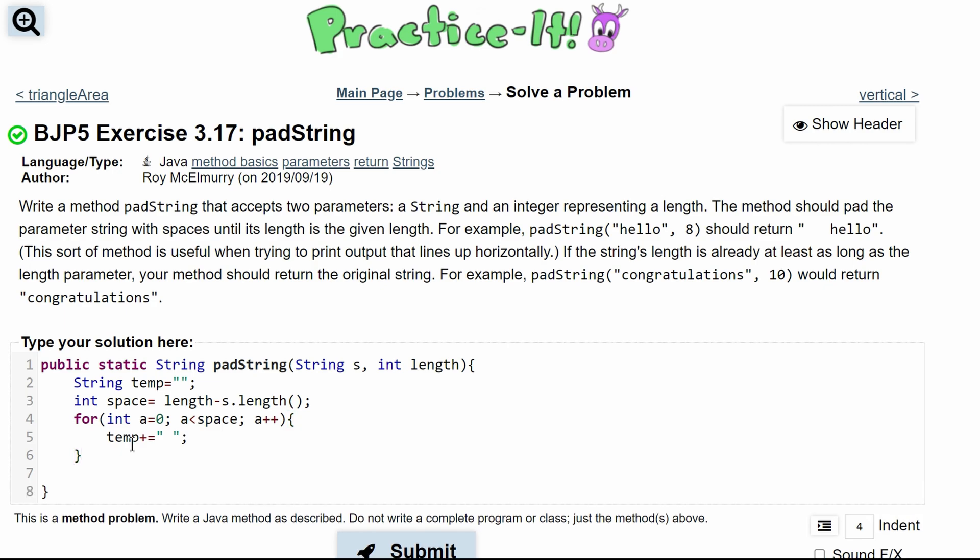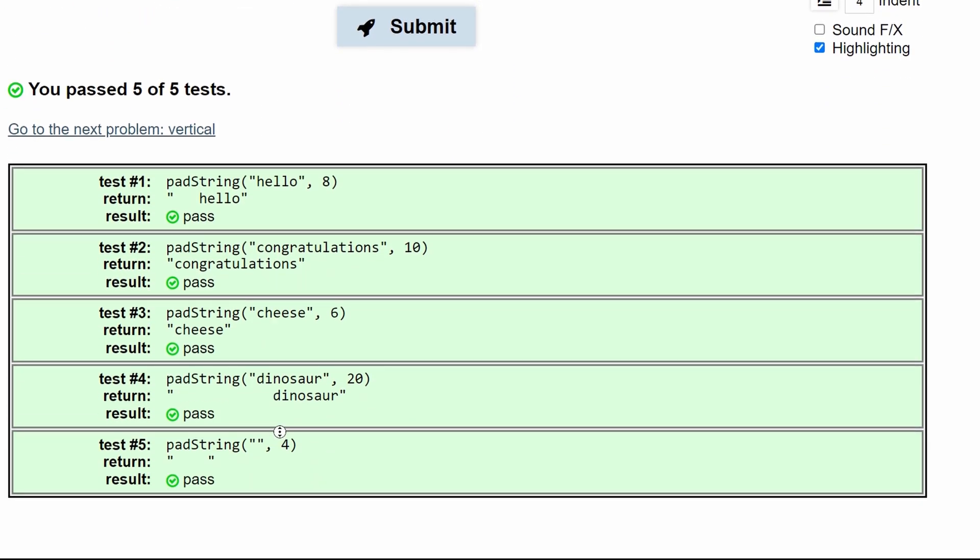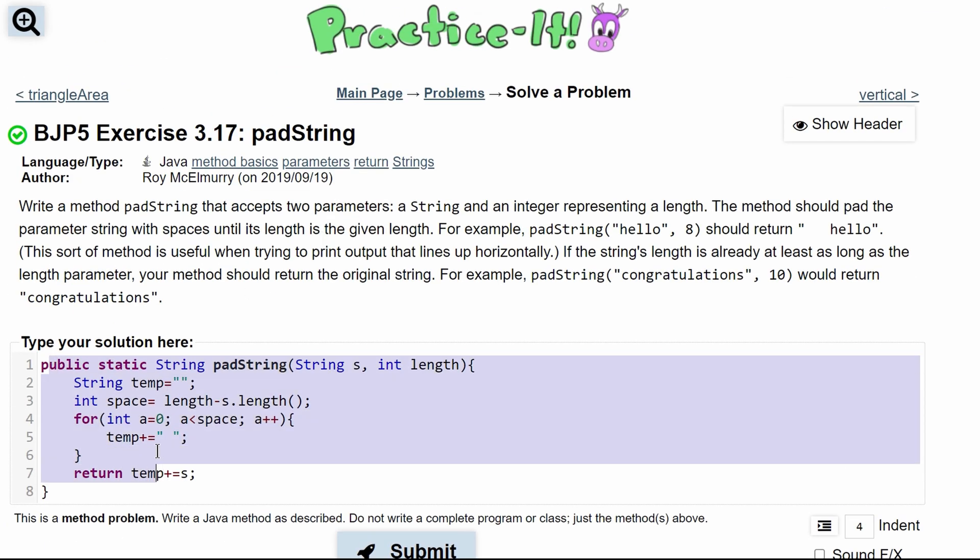After this, we are just going to return temp, but we haven't put in our string yet. So we're going to do temp plus equals s. If we submit this, we have passed all five tests. So this is the code for this problem.